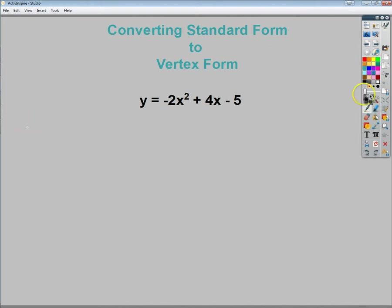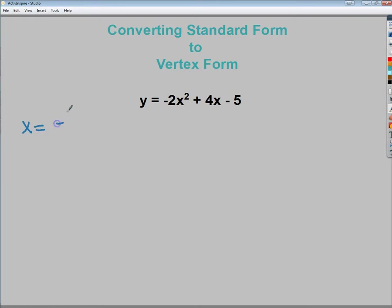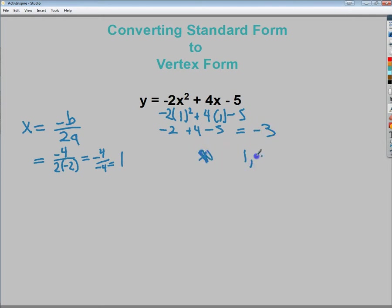So I need to find my axis of symmetry first. Negative b over 2a. So in this case, that would be negative 4 divided by 2 times negative 2. And I end up doing negative 4 divided by negative 4. So my axis of symmetry here would be x is equal to 1. I can use that information to plug back in and get my y value for my vertex. 1 squared plus 4 times 1 minus 5. So negative 2 plus 4 minus 5, and you end up with negative 3. So I have my vertex value of 1 and negative 3.